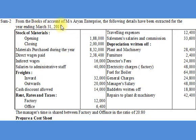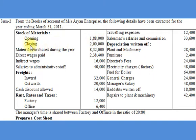From the books of account of Mrs. Aryan Enterprise, the following details have been extracted for the year ended 31st March 2011. Stock of Materials: Opening Stock Rs. 1,88,000; Closing Stock Rs. 2,00,000; Materials Purchased During the Year Rs. 8,32,000; Direct Wages Paid Rs. 2,38,400.